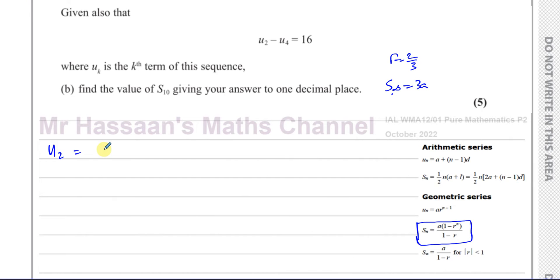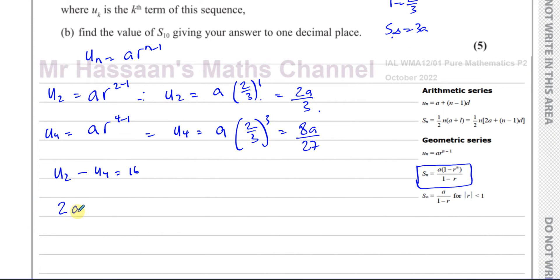U2 means the second term of the sequence. We know that UN, as they give us the formula, is A times R to the power of N minus one. So U2 is going to be A times two-thirds, which is 2A over 3. And U4 is A R to the power of four minus one. So U4 is equal to A times two-thirds to the power of three. Two cubed is eight, so it's 8A over 27. And we know that U2 minus U4 equals 16.